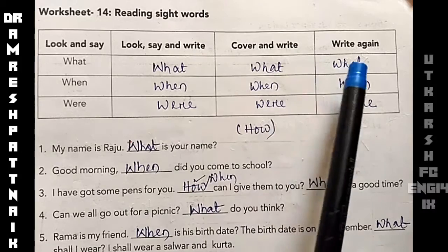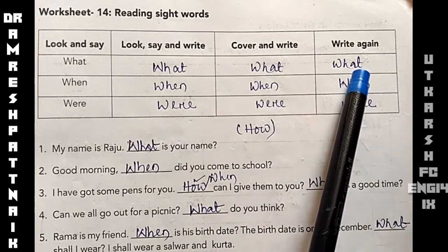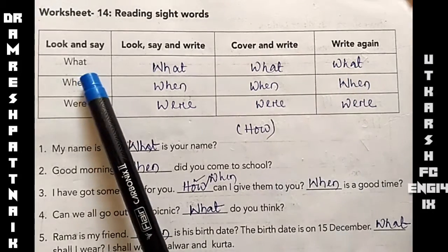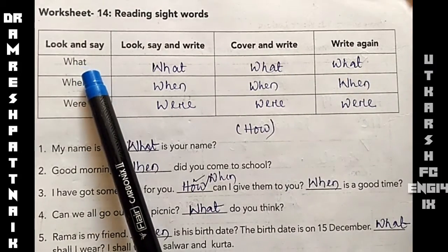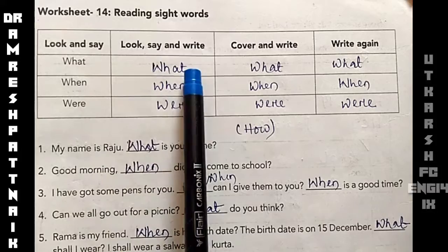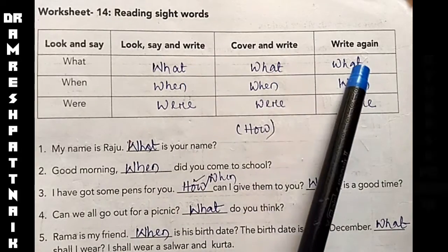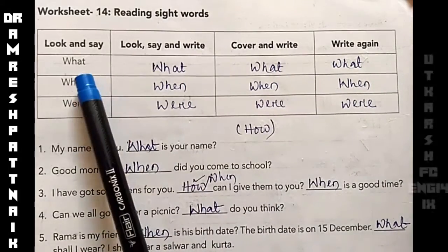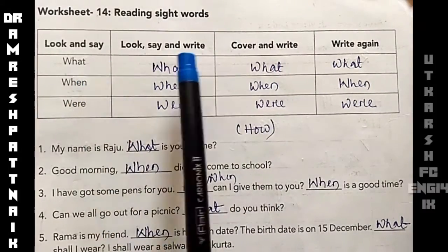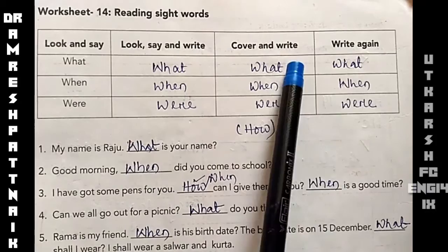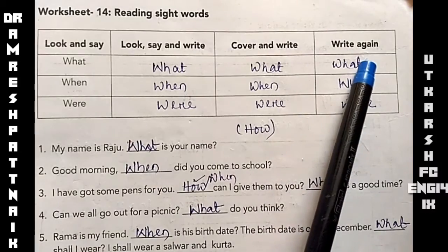What you have to do: look and say, then you have to write, then cover and write, then write again. The sight words practiced are: what, when, and where.